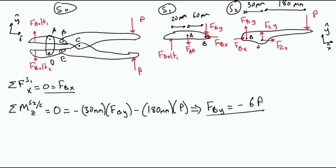Solving for FBy, we find that it is equal to minus 6P. So the direction we have chosen to draw it is opposite the direction it really is.